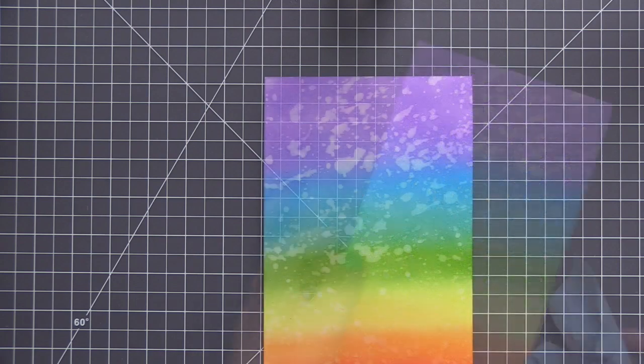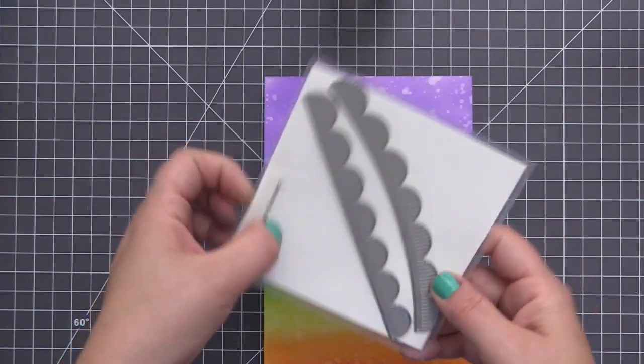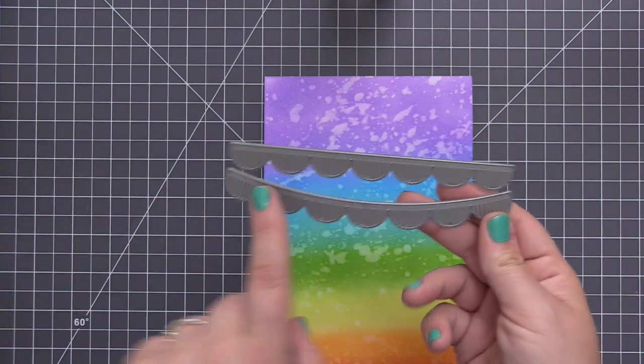I'm also adding water to the panel to give it that distressed look by adding the water splotches. And then once I have that done and I have the panel completely dry, we can take our fringe scallop borders and do a whole lot of die cutting.